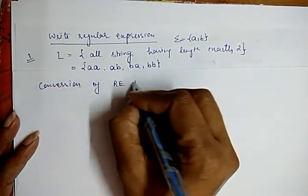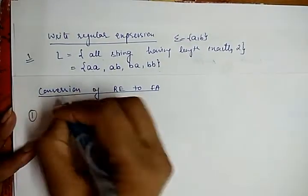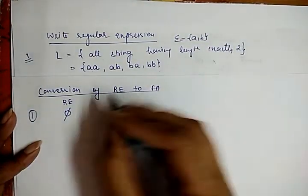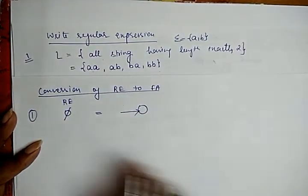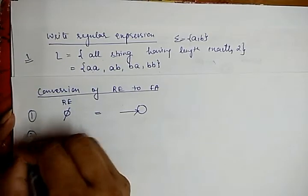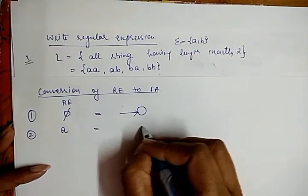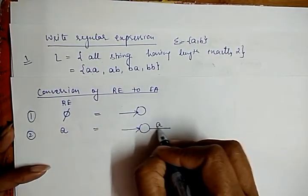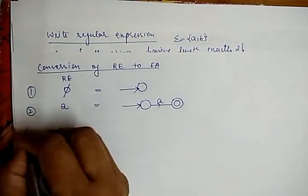Now we look at the building blocks for converting a regular expression to a finite automata. First, if the regular expression is phi, the finite automata has a single non-accepting state — there is no accepting state. Second, if the regular expression is 'a', the finite automata has an initial state, a transition on 'a', and a final accepting state.